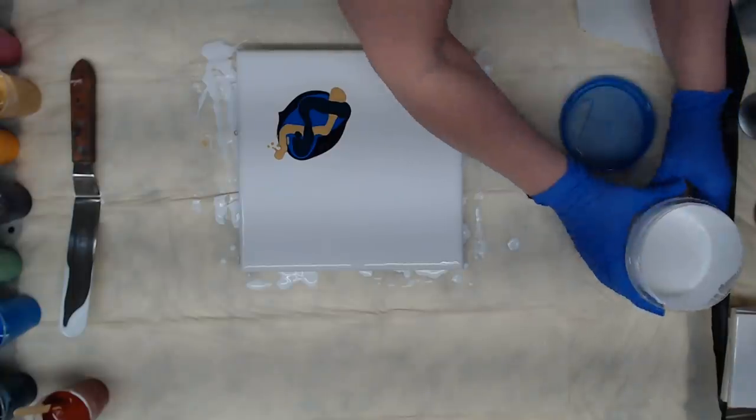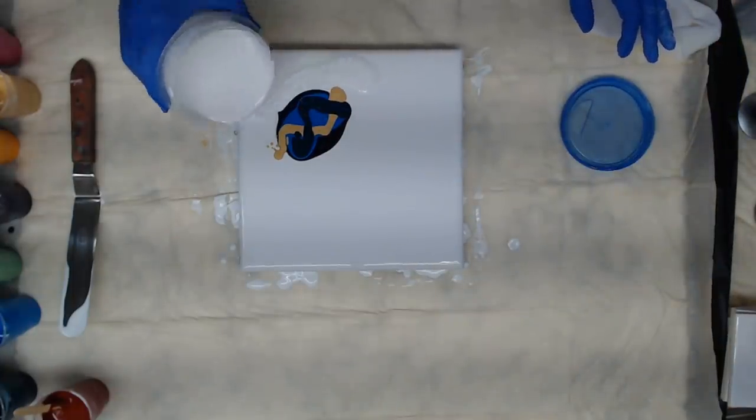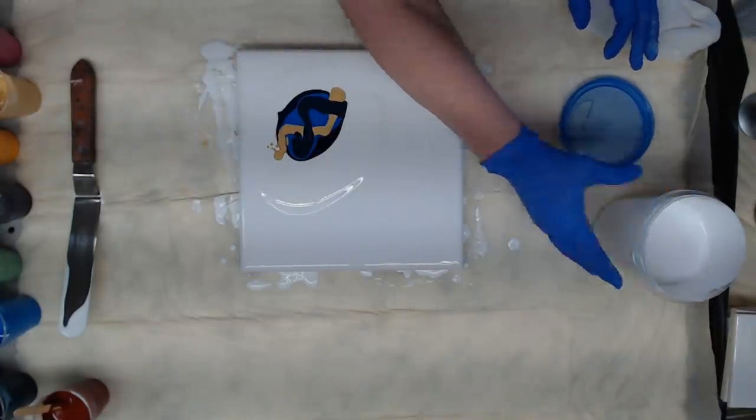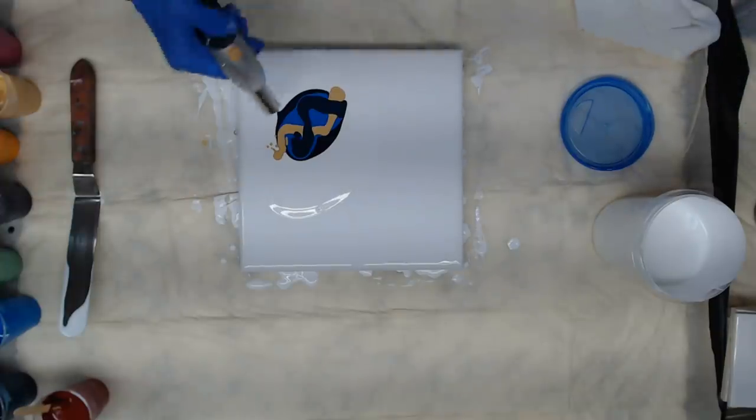So you put the white around the back. Just one thin layer. And then you swoop the front. You want the paint in the front. So we can push it over with the blow dryer. I'm going to pop those bubbles first.